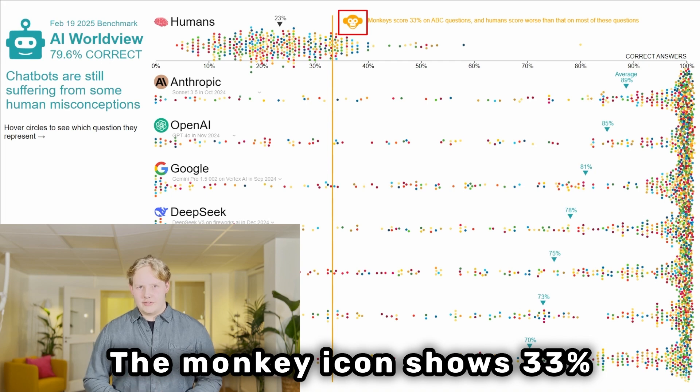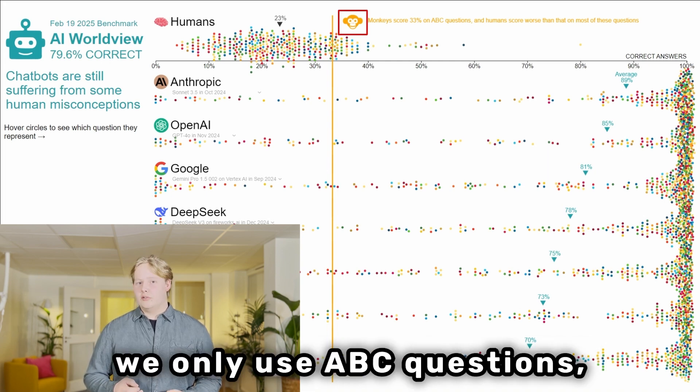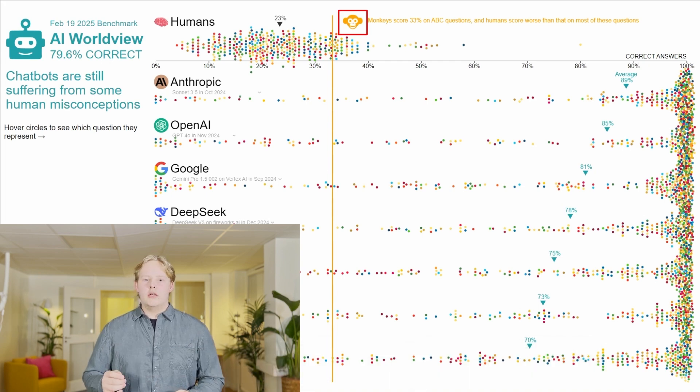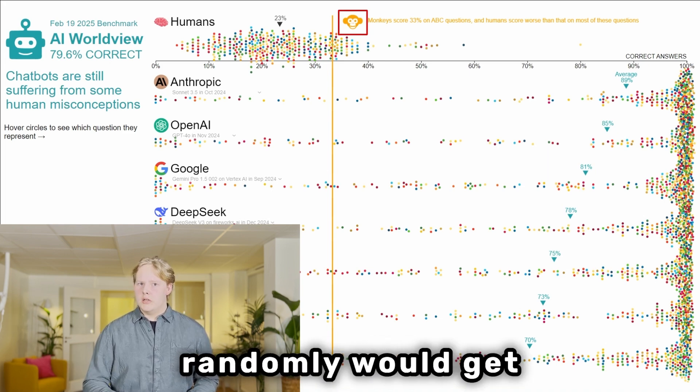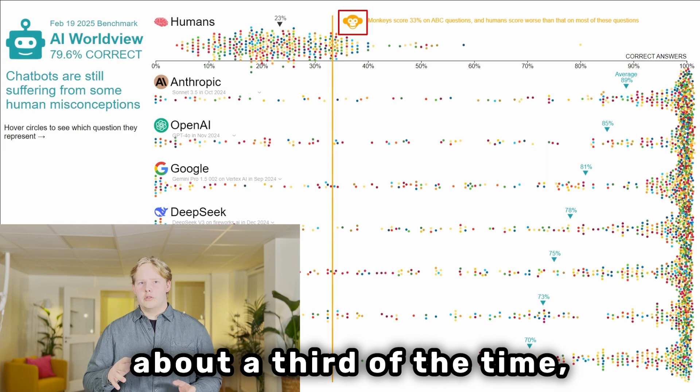The monkey icon shows 33% because we only use ABC questions. So they all have three options and a monkey picking the answers randomly would get the correct answer about a third of the time.